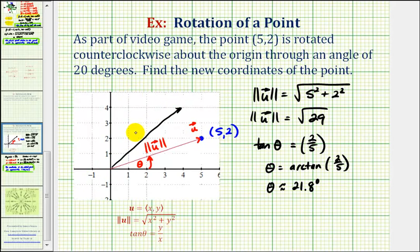The magnitude of this vector would still be the square root of 29, but the direction, which we'll call theta sub 2, would be 21.8 degrees plus 20 more degrees. So theta sub 2 equals 21.8 degrees, the direction of the red vector, plus 20 more degrees. So the direction of the rotated vector would be 41.8 degrees.